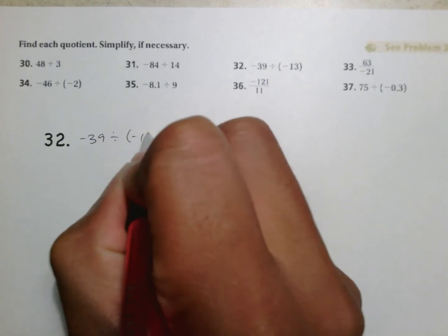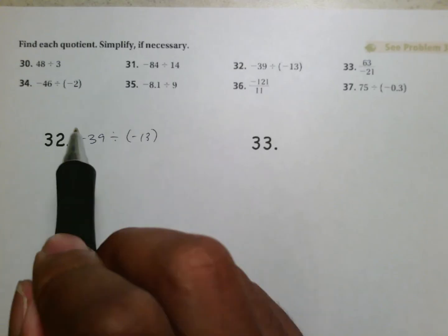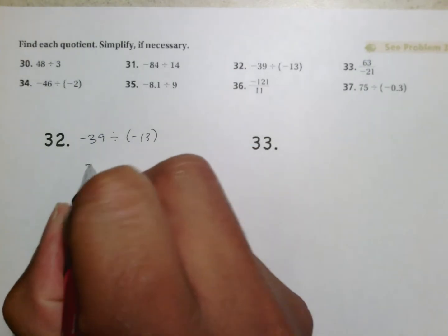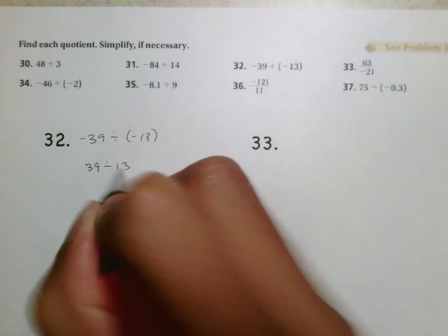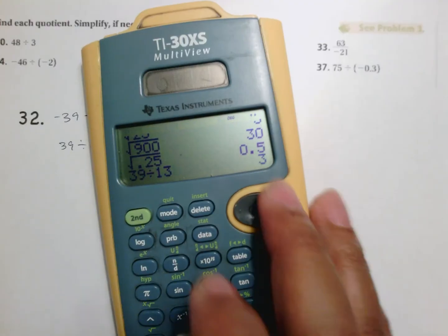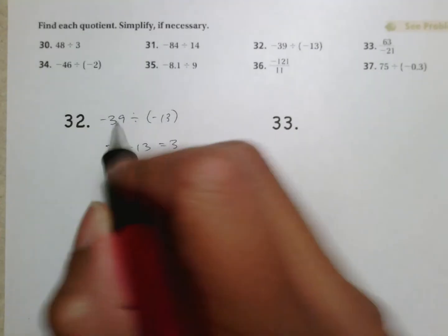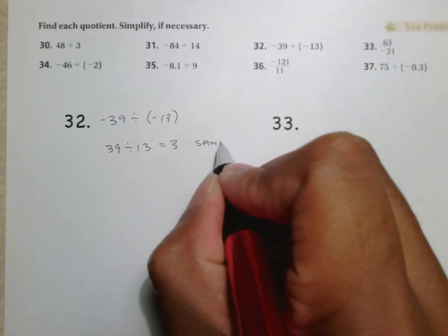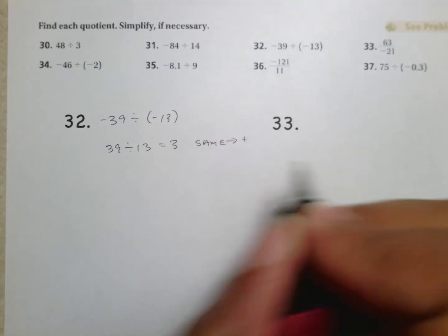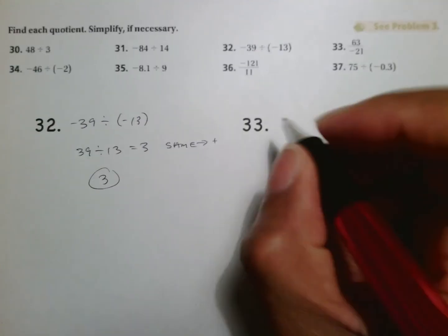Number 32 gives us negative 39 divided by negative 13. Multiplication and division rules are the same. The first thing you want to do is ignore the signs and do 39 divided by 13, which is 3. The second thing is to look at the signs: the signs are the same, which means it's going to be positive. So our answer is positive 3 — very simple, very direct.